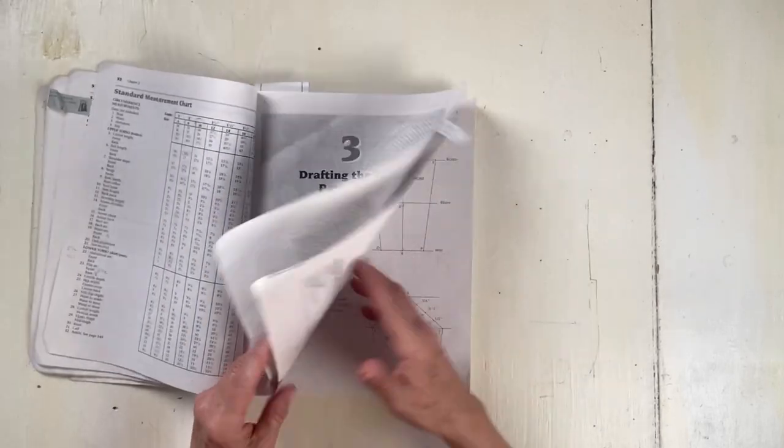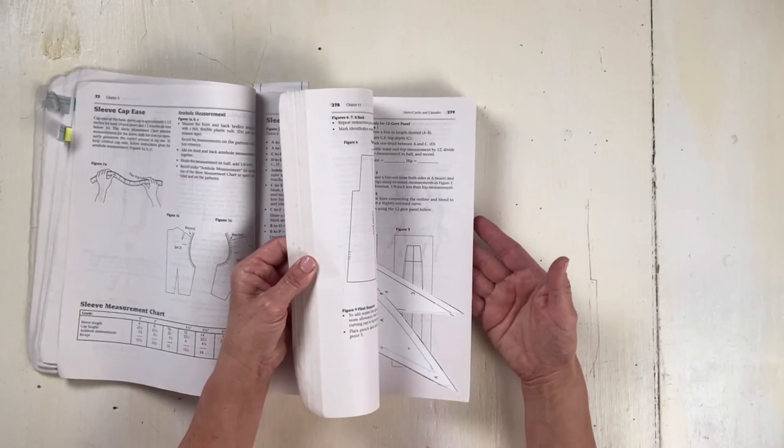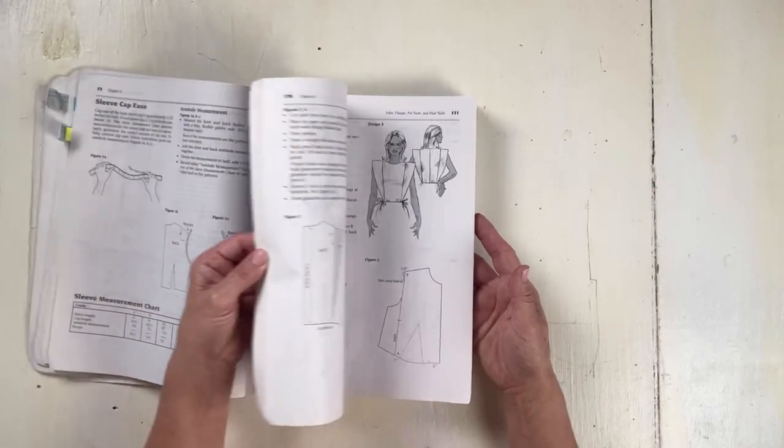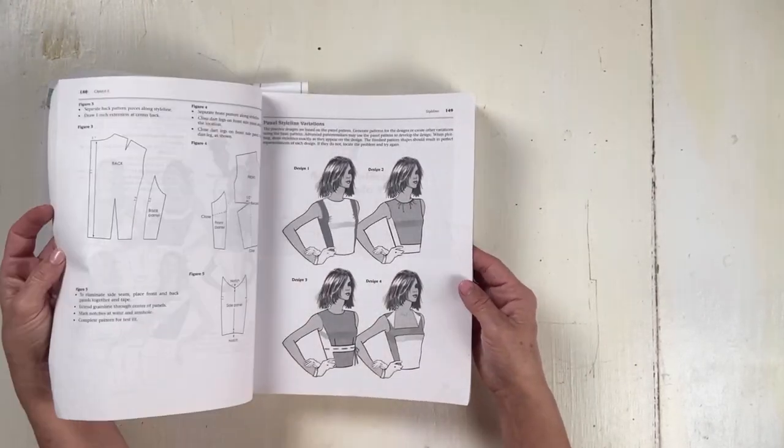They go through, let me see if I can find the style lines, collars, contouring. There's the style lines.